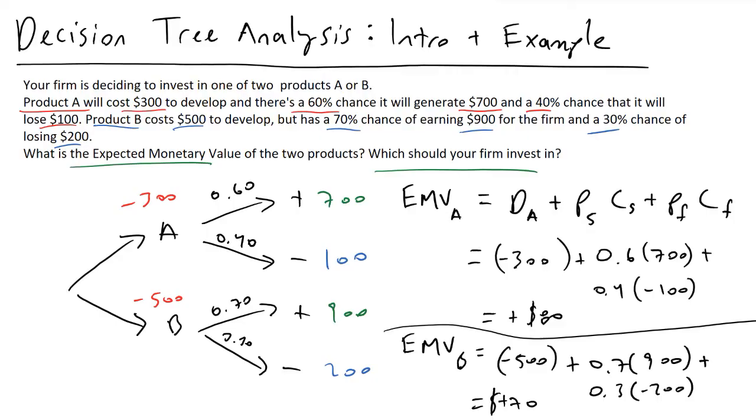What this tells us is that when we look at the expected monetary values for both A and B now, is that product A, in the long run, will actually be returning us a higher profit or return on investment than product B. And so that is the reasoning why we went through this whole decision tree analysis, looking at both the positive and negative scenarios for both of these products in our decision.